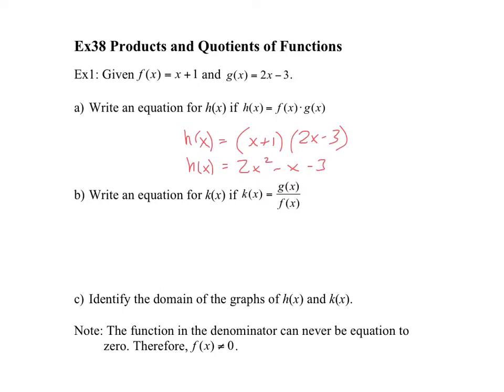Write an equation for k of x if k of x is equal to g over f, while k of x is simply the division of 2x minus 3 divided by x plus 1.